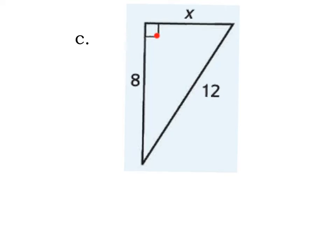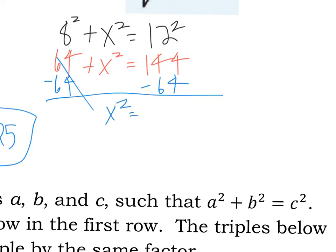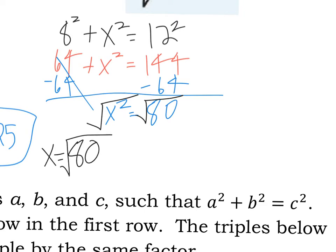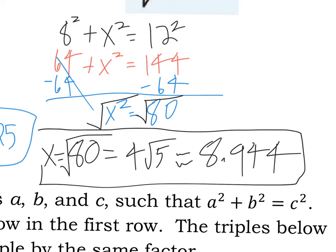On example C, the right angle points to 12, making that my hypotenuse or c side. I'll do 8 squared plus x squared equal to 12 squared. 8 squared is 64, so 64 plus x squared equals 144. Subtract 64: x squared equals 80. Take the square root of both sides — x equals the square root of 80. Simplifying: 80 is 16 times 5, the square root of 16 is 4, so x equals 4 times the square root of 5. Rounded to the nearest thousandths place, that's 8.944. Any of these three forms is acceptable.